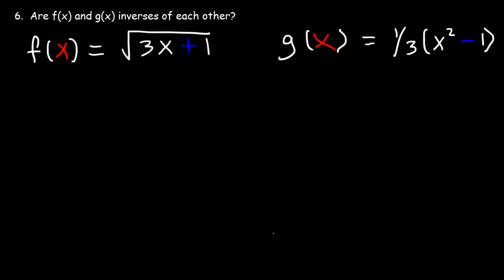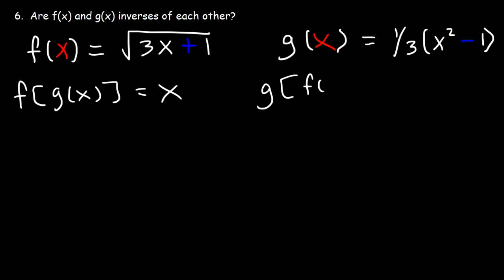Number 6: are f of x and g of x inverses of each other? To prove this, we have to show that f of g of x is equal to x, and also that g of f of x is equal to x. If we can do that, then we know for certain that f of x and g of x are inverses of each other. So let's start with f of g of x — let's plug g of x into f.